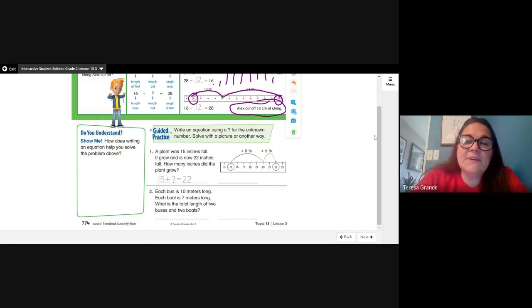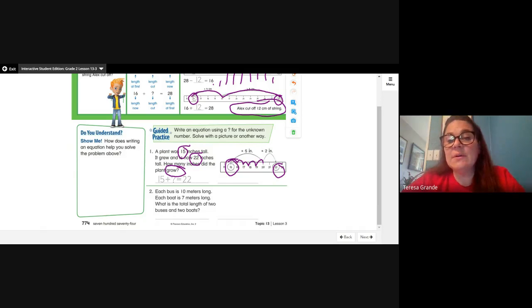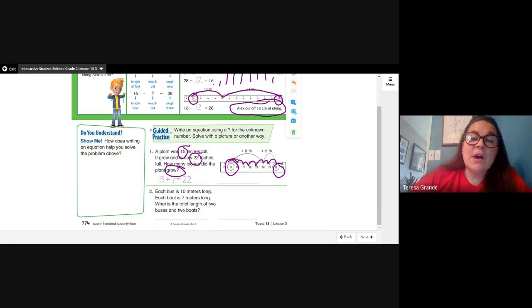Number one: A plant was 15 inches tall. It grew and is now 22 inches tall. How many inches did the plant grow? The word grow means it got bigger. It started at 15 and ended up at 22. On our number line we start at 15 and need to get to 22. Let's count: 15, 16, 17, 18, 19, 20 - that is 5, then we need to get to 22, so 5, 6, 7. That is 7 more inches. Our equation is going to be 15 plus 7 equals 22.